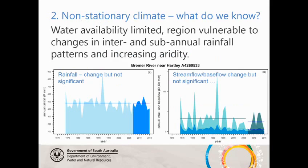Coming to the second point — non-stationary climate — there's been some changing rainfall. The light-coloured area to the left is the beginning of the observed record for the Bremer River site. We've got earlier data to 1970 with Scott Creek, which basically coincides with the period over which the WAP was made. The point at 2006 is the end of the WAP period, and the comparisons are made between these two.